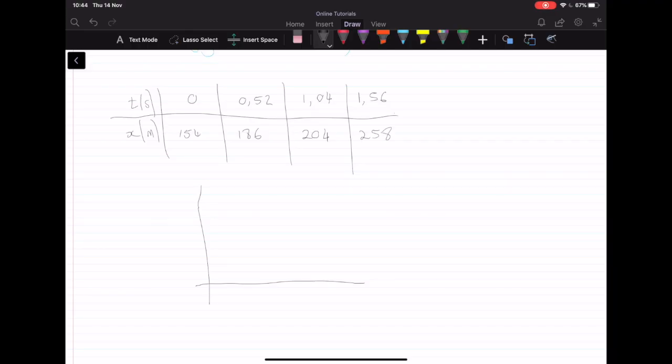All we know is that at t equals 0, at t equals 0.52, and at t equals 1.04, we've got values of 154, 186, and 204. So all we know is that these points pass through here.